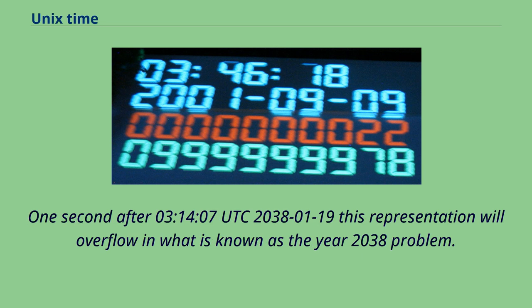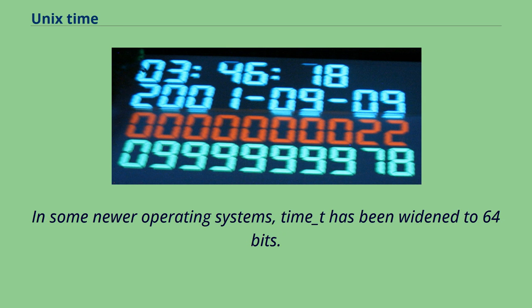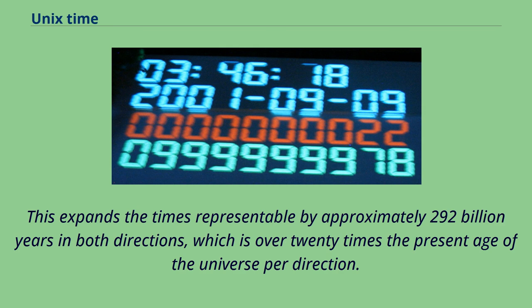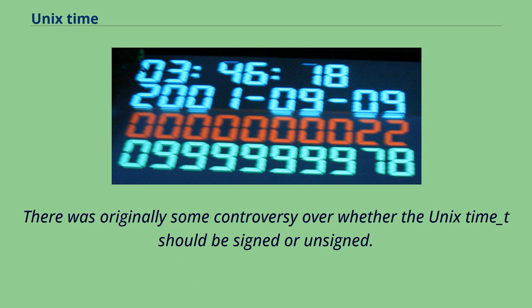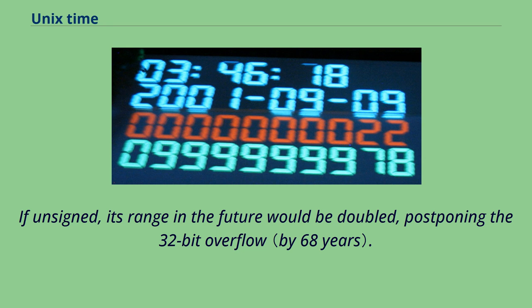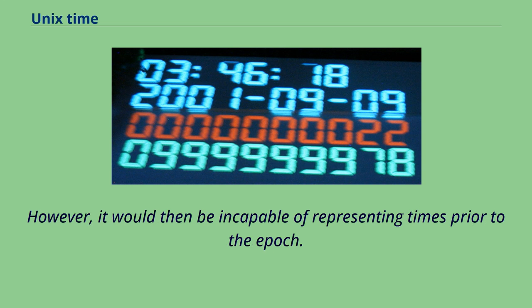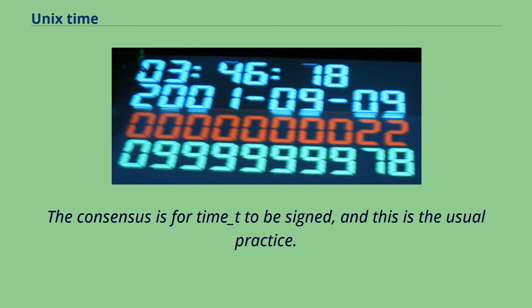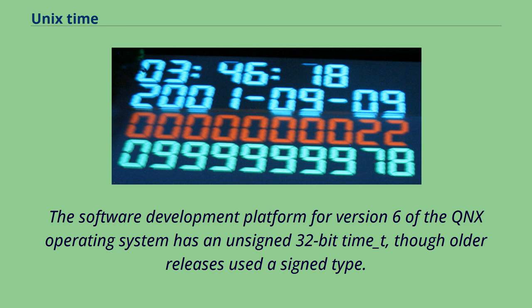One second after 03:14:07 UTC on January 19, 2038, this representation will overflow in what is known as the year 2038 problem. In some newer operating systems, time_t has been widened to 64 bits. This expands the times representable by approximately 292 billion years in both directions, which is over 20 times the present age of the universe per direction. There was originally some controversy over whether time_t should be signed or unsigned. If unsigned, its range in the future would be doubled, postponing the 32-bit overflow, but it would then be incapable of representing times prior to the epoch. The consensus is for time_t to be signed, and this is the usual practice. The QNX version 6 development platform has an unsigned 32-bit time_t, though older releases used a signed type.